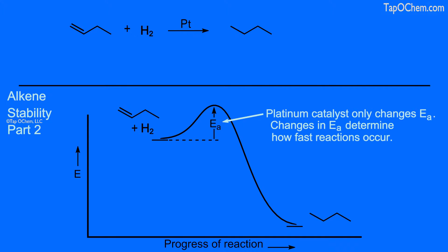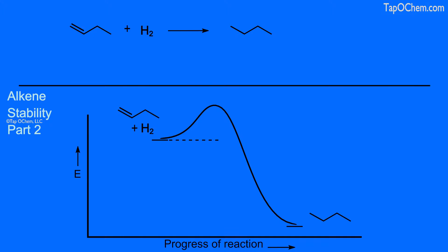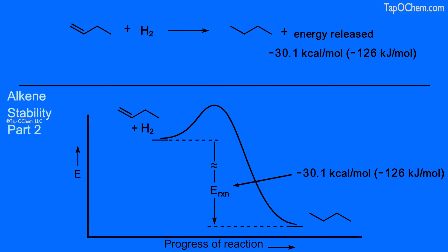Let's remove the catalyst and the label of the activation energy. Now let's draw a second horizontal dashed line from the product and label the energy difference between the reactants and the product. When 1-butene is hydrogenated, 30.1 kilocalories per mole of energy is released in the form of heat. This energy that is released is called the heat of hydrogenation.